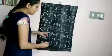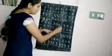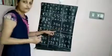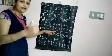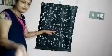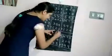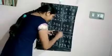Let us add the ones first. 4 plus 3. 4 after: 5, 6, 7. 4 plus 3 is 7.